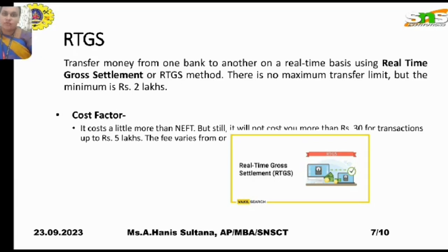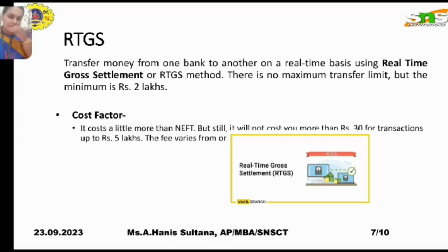With NEFT you can transfer any amount — for example 10,000 or 15,000 rupees — but with RTGS the minimum amount is 2 lakhs. RTGS is suited for bulk or business transactions. It costs a little more than NEFT; for example, it may cost more than 30 rupees for transactions up to 5 lakhs, though this varies between banks.